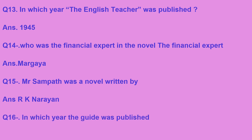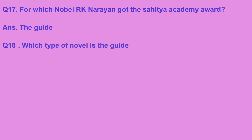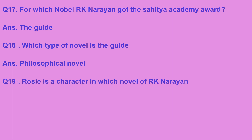In which year was The Guide published? The Guide, a very famous and important work of RK Narayan, was published in 1958, and for The Guide he got the Sahitya Akademi Award in 1960. Which type of novel is The Guide? The Guide is a philosophical novel. The theme of The Guide is how a tour guide, Raju, transformed himself into a spiritual guide — the journey of that transformation is shown in this novel.